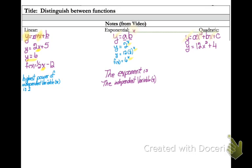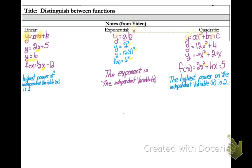y equals 12x squared plus 4. y equals negative x squared plus 2x. And using function notation, f of x equals 2x squared plus 4x minus 5. Now what these all have in common is the highest power on the x variable or the independent variable is a 2. If your highest power on x is 2, that is a quadratic equation.